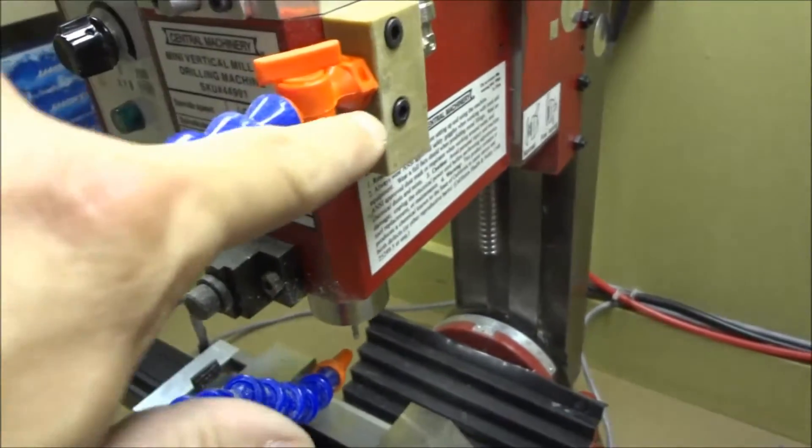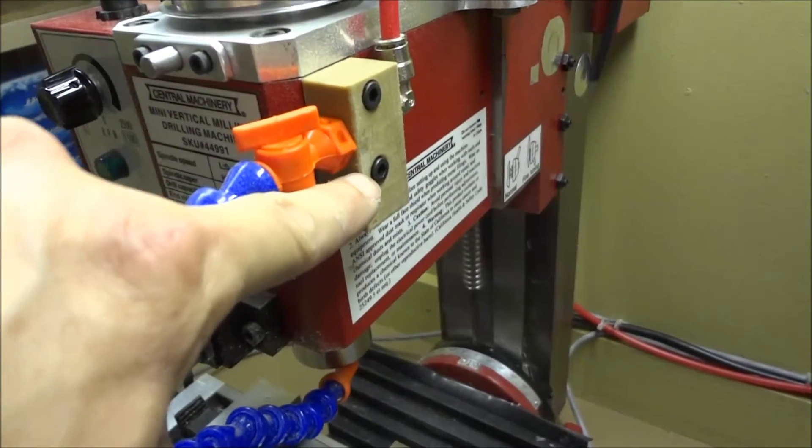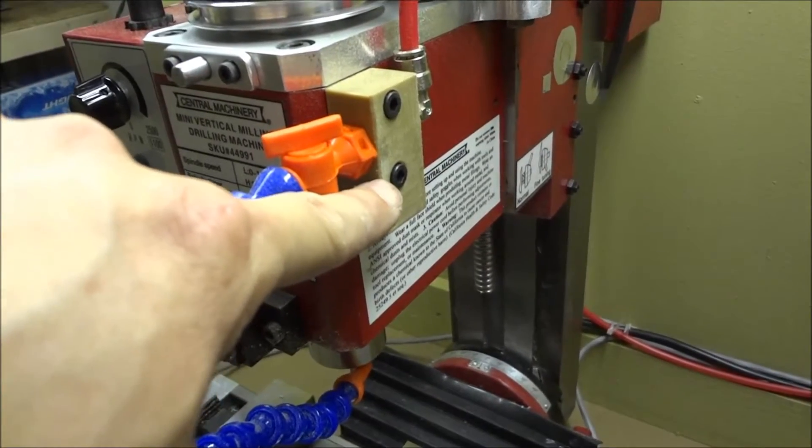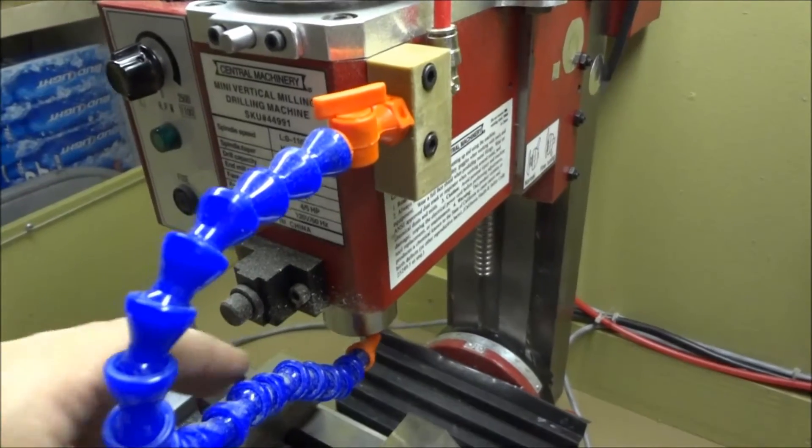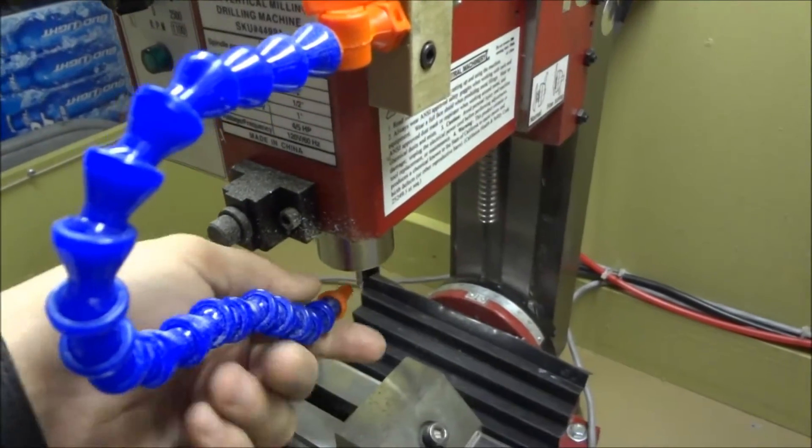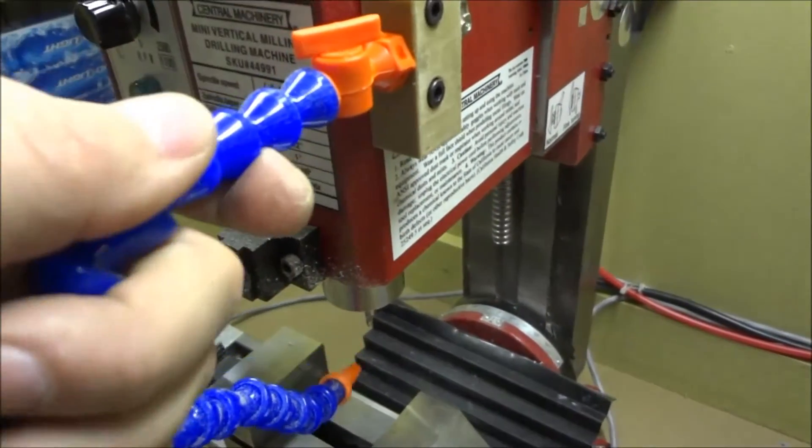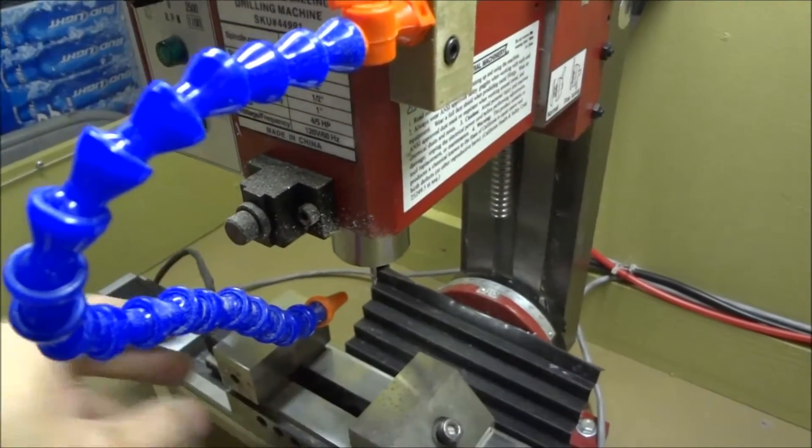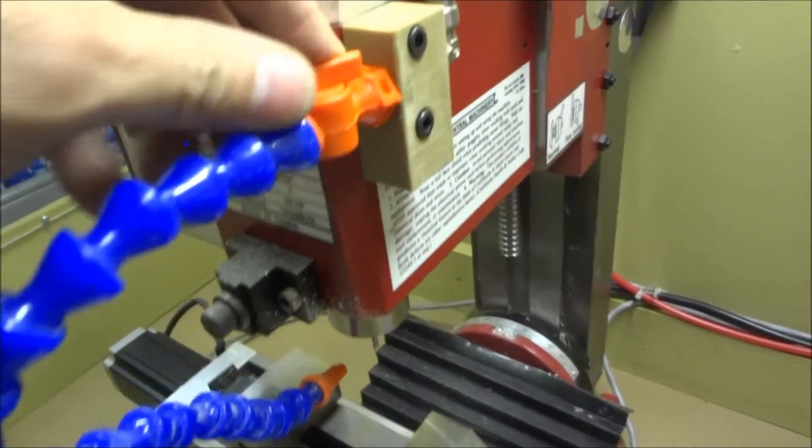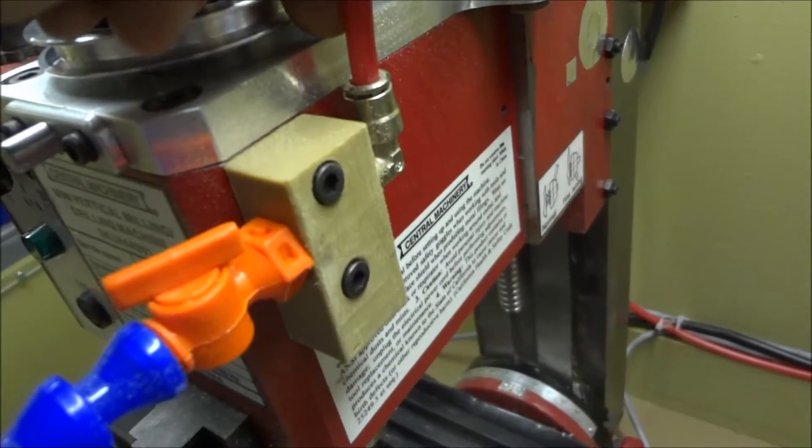I just bolted it right to the X2 mill in the stock OEM holes that were used for the fine adjustment for the z-axis feed. I picked this flexible hose up off of eBay and I've got a quick connect coupling here with some quarter inch airline.